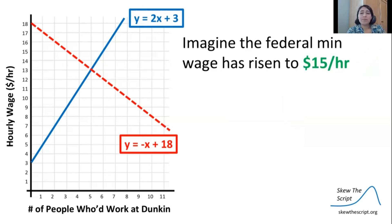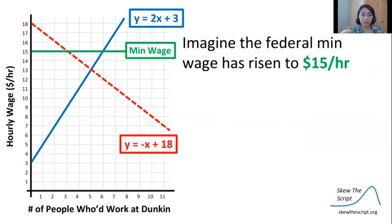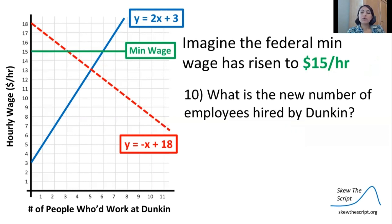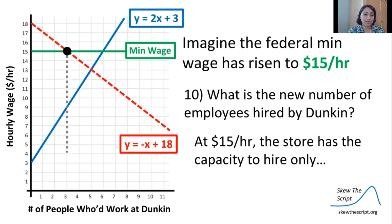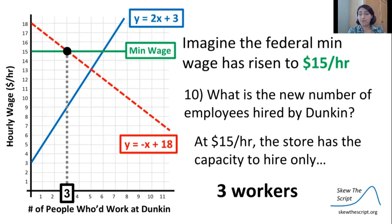Now let's imagine that the federal minimum wage has been risen to $15 an hour. So now the businesses are required to pay $15 to each worker per hour. We can plot that by showing a horizontal line at y equals 15 on our graph. The new number of employees that Dunkin' can afford to hire — we can see where the red line intersects our green line — and at $15 an hour, the store has the capacity to hire three people. Previously, with no restriction placed on the market, they were able to hire five. And at a $15 an hour wage, the number of people willing to work for Dunkin' is going to be six — you can see the intersection between the green and the blue would be six. So this three workers is lower than what Dunkin' Donuts was able to afford to hire before the minimum wage was put in place.